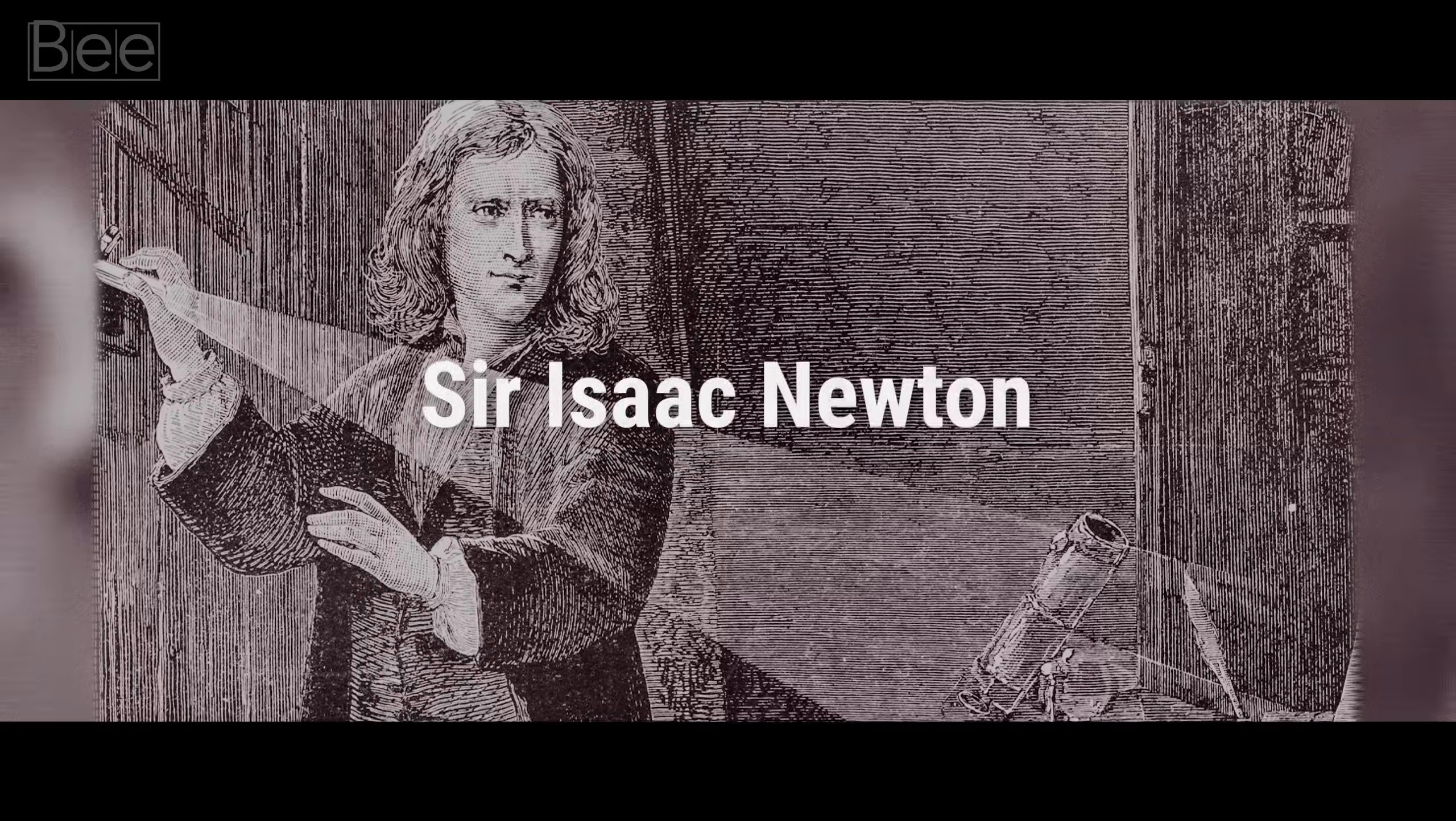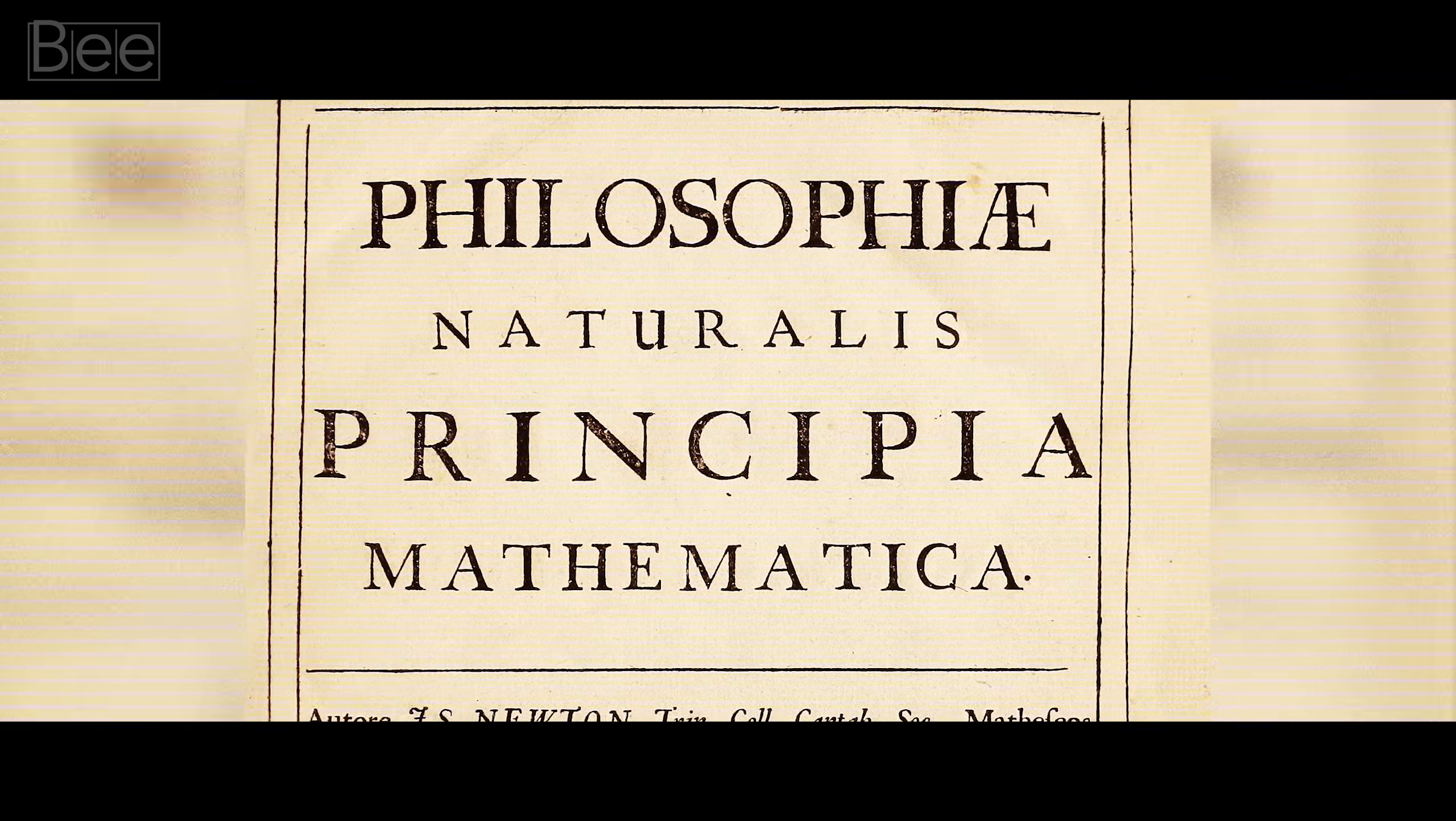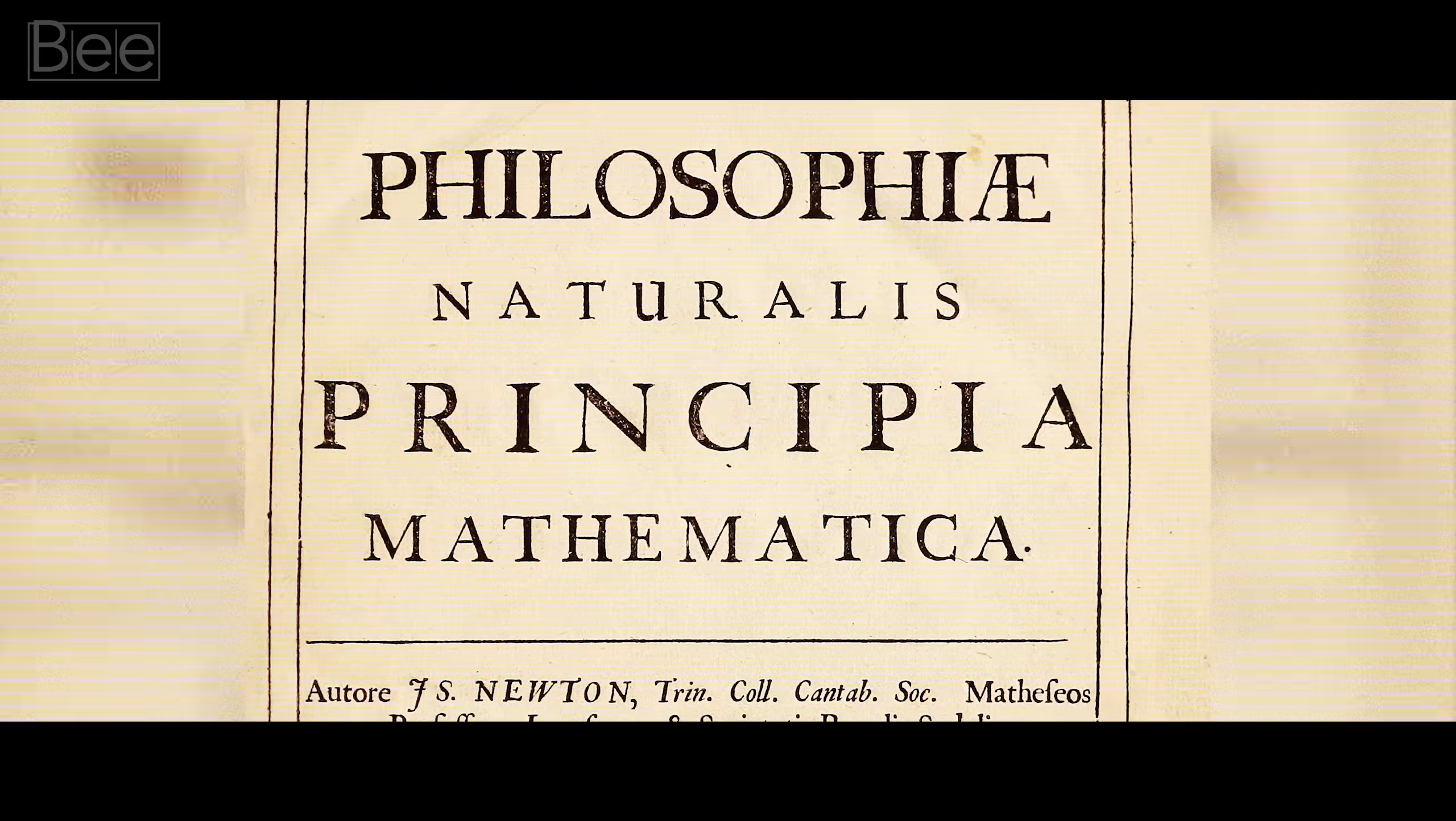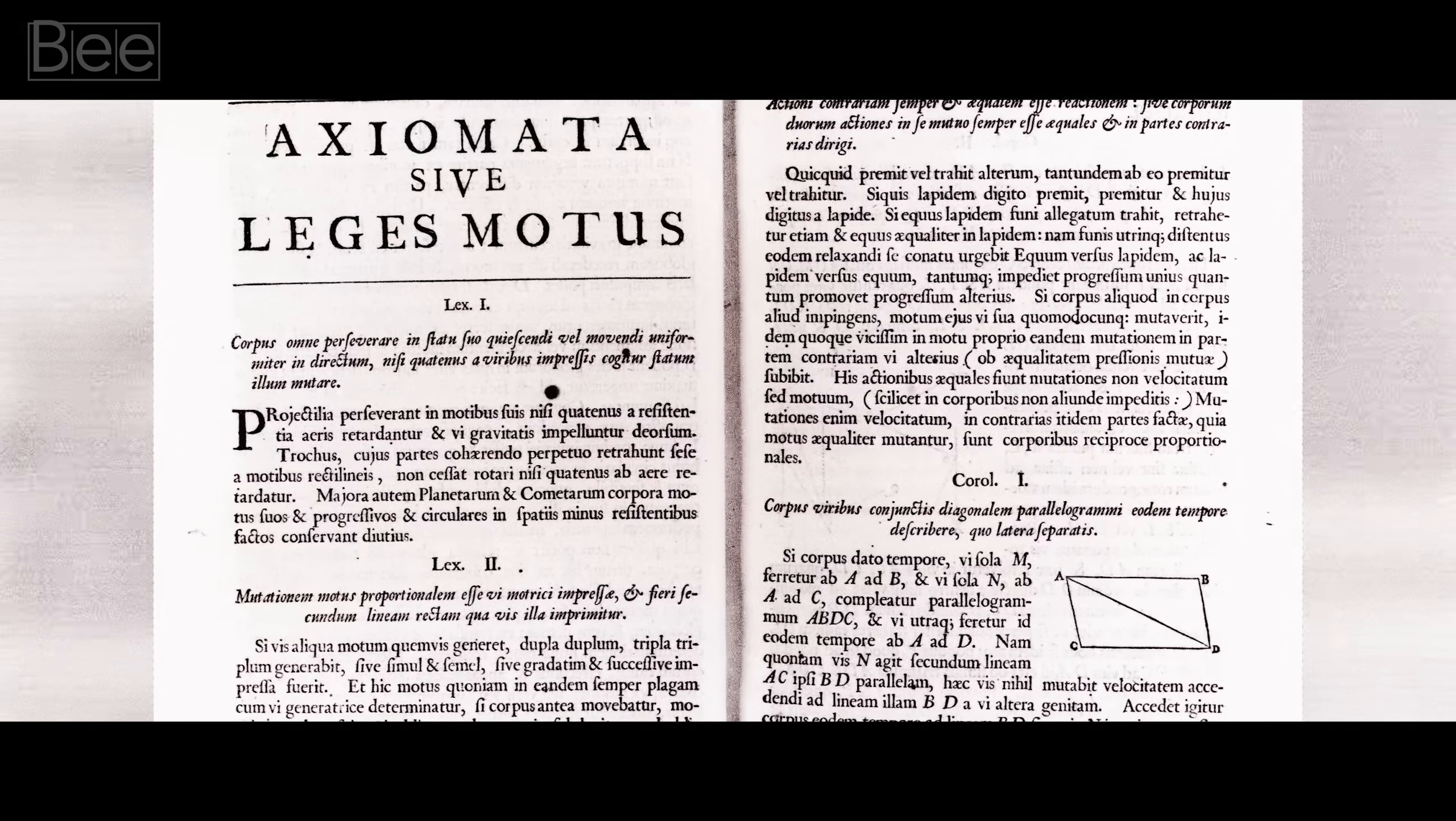We cannot start talking about Einstein without discussing classical physicist Sir Isaac Newton. In 1687, Newton published his book, Mathematical Principles of Natural Philosophy. In the book, he described his three laws of motion and the law of gravity. His book is considered one of the most important writings in the history of mankind.